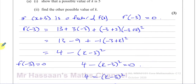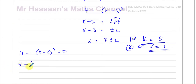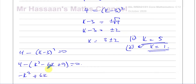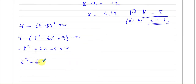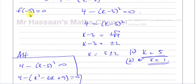Alternatively, some people might have just expanded the bracket. You have 4 minus (k minus 3) squared equals 0. Expanding gives 4 minus (k squared minus 6k plus 9) equals 0, which simplifies to minus k squared plus 6k minus 5 equals 0. Multiplying through by minus 1 gives k squared minus 6k plus 5 equals 0, factorizing to (k minus 5)(k minus 1) equals 0, so k equals 5 or k equals 1. But I think the square root method is easier — just don't forget the positive and negative options.